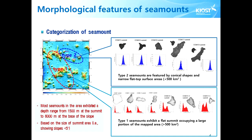Some seamounts with the triangular-shaped guyot appear to be the largest flat seamounts in the study area. Some seamounts have relatively flat summits with many small cone-shaped volcanoes, which are less than 50 m in diameter. On the other hand, type 2 seamounts are characterized by conical shapes and narrow flat top surface areas, which is less than 500 sq km. Type 2 seamounts are generally smaller than the type 1 seamounts.